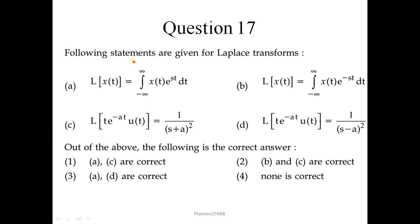Question number 17: Following statements are given for Laplace transforms. In the options, the direct formula to calculate the Laplace transform is given. The correct formula is b: Laplace transform of x(t) equals integration between minus infinity to infinity of x(t)e to the power minus st dt. You have to remember this minus sign. Now when you multiply by t, your Laplace transform is 1 upon s plus a whole square. So correct is b and c. Correct option is 2.